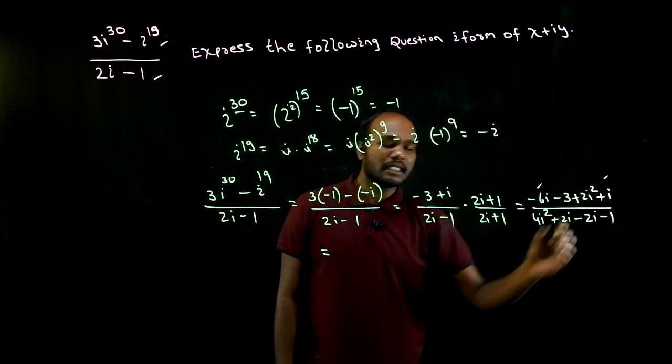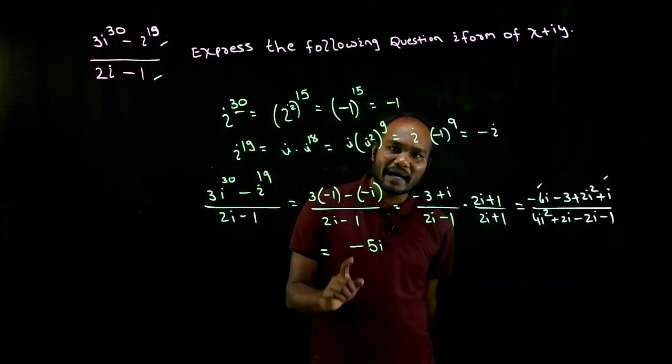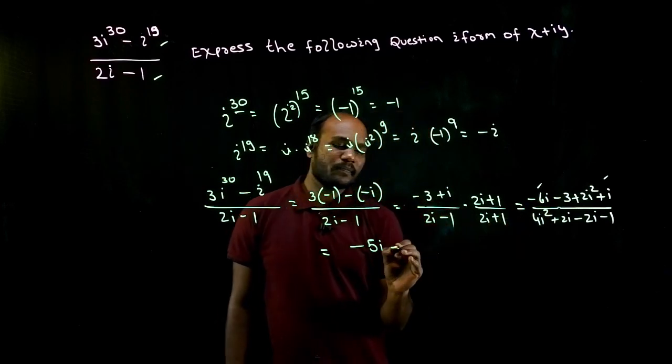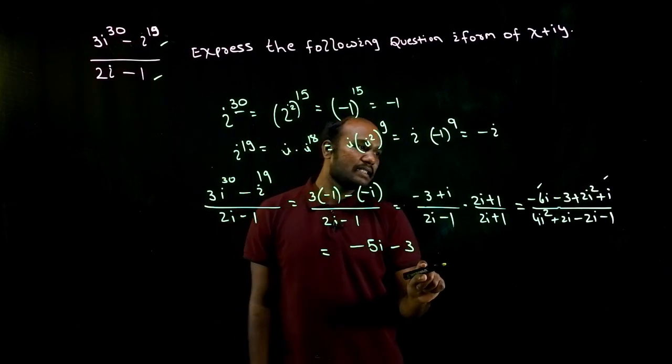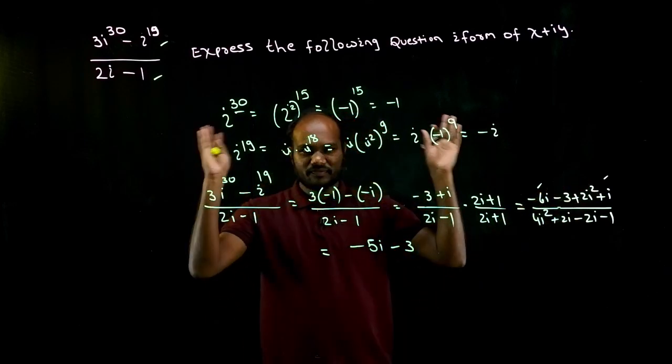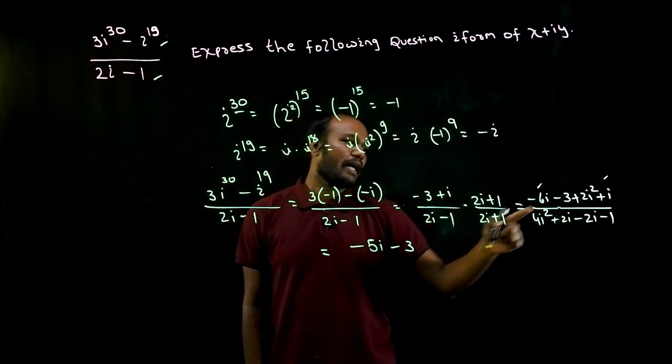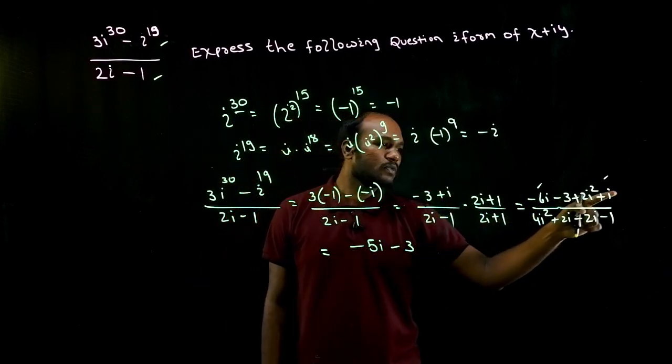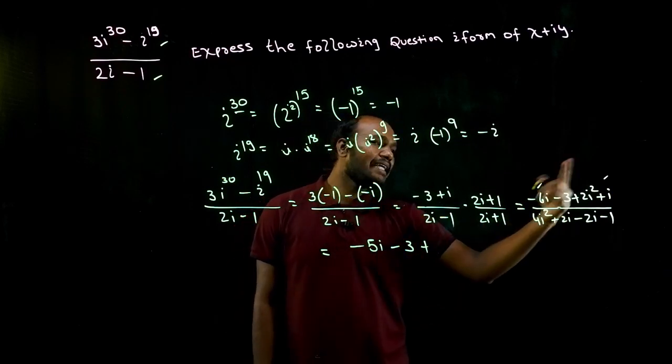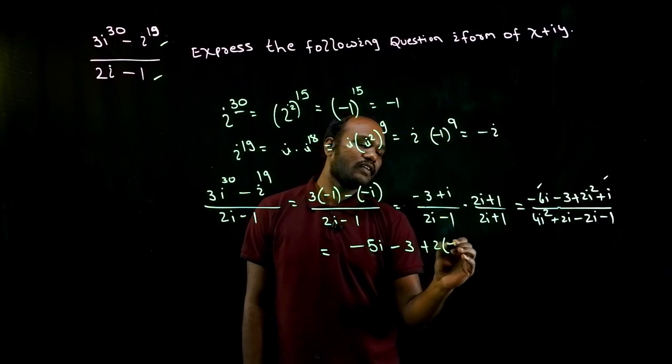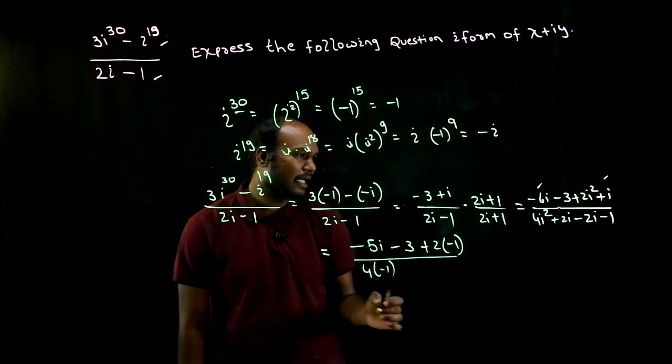See here, minus 6i plus i is how much? Minus 5i. Minus 6i plus 1i is minus 5i, minus 3, minus 3. Okay, minus 6i plus 1i is minus 5i, minus 3 plus 2i square. 2i square value is minus 1, divided by, in the same way, 4i square value is minus 1, plus 2i minus 2i get cancelled, I have a minus 1.